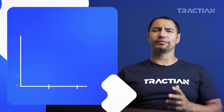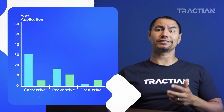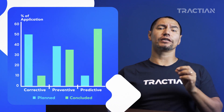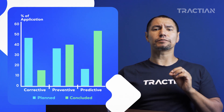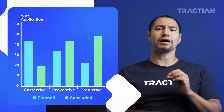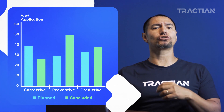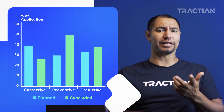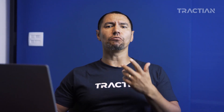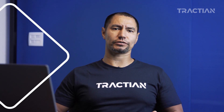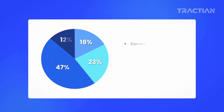So usually you'll have a mix of these types of maintenance according to the reality of your company. It's indispensable to keep monitoring how much has been done of each type in relation to what was actually planned. The more you can implement predictive maintenance, the more equipment and data information, the better you can optimize your resources.